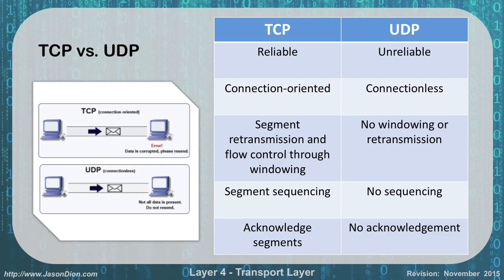When we look at TCP versus UDP: TCP is reliable, where UDP is unreliable. TCP is connection-oriented; UDP is connectionless. TCP has segment retransmission and flow control through windowing, but UDP has no retransmission or windowing. With TCP, we have sequencing of our segments in the proper order; with UDP, we just send it out — there is no sequencing. In TCP, we acknowledge segments as they come in, but with UDP there are no acknowledgements at all.